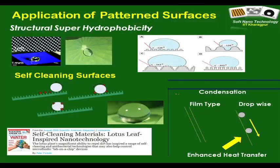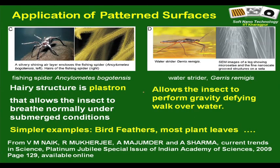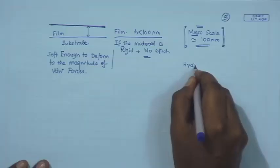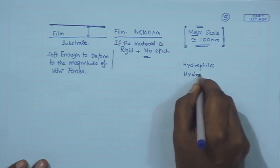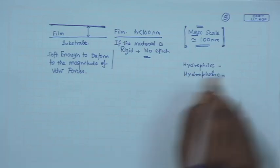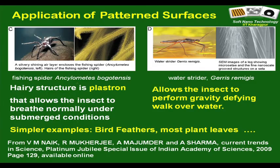You will realize when we talk about Young's equation that it is actually a combination of surface structures as well as a low surface energy coating that makes this possible. These types of surfaces are artificially made, and in the animal kingdom there are lots of examples. Many of you know the terms hydrophilic and hydrophobic, which we will talk about in greater detail. For example, a fishing spider can stay under water for roughly half an hour, and a water strider can walk on a water surface — both attributed to hairy structures in their legs.